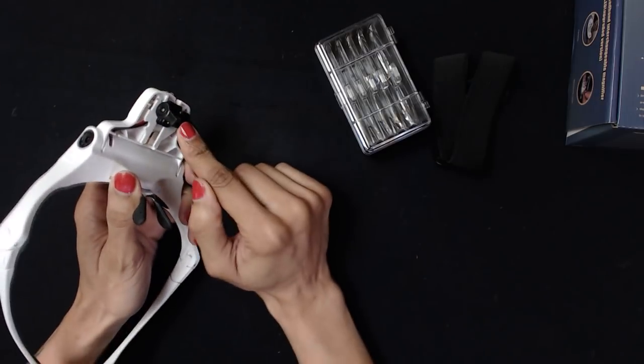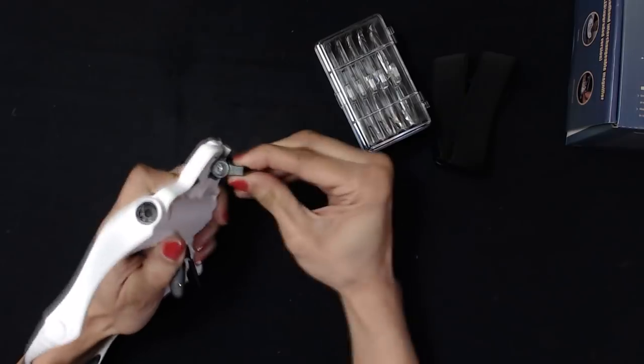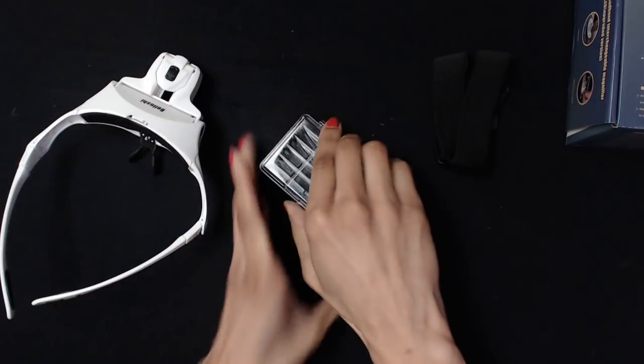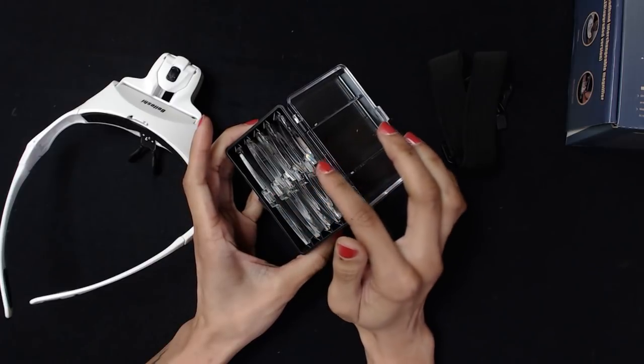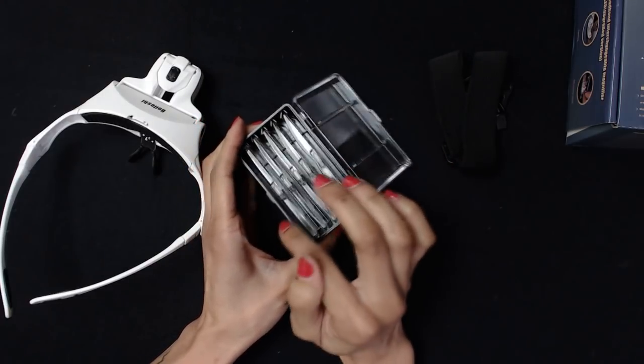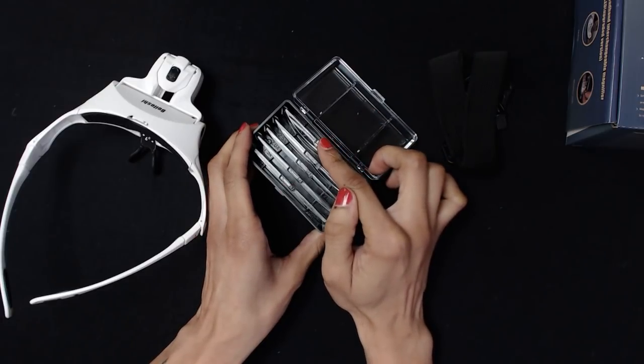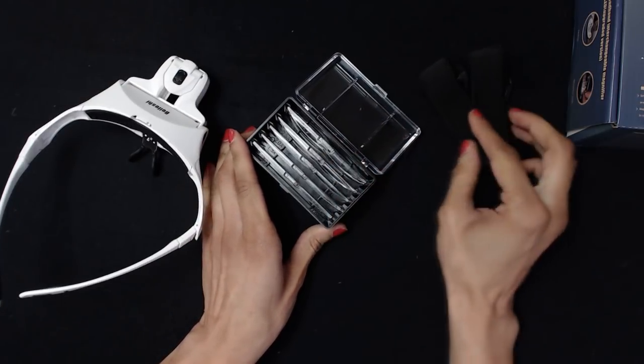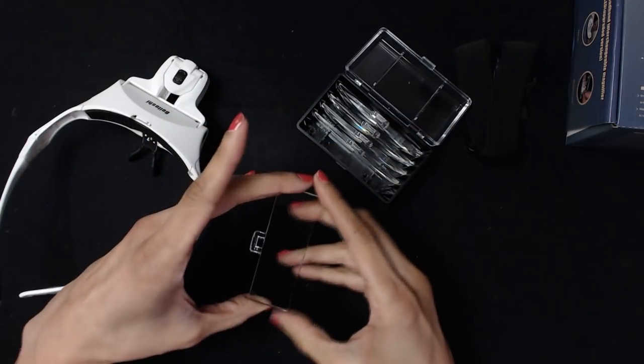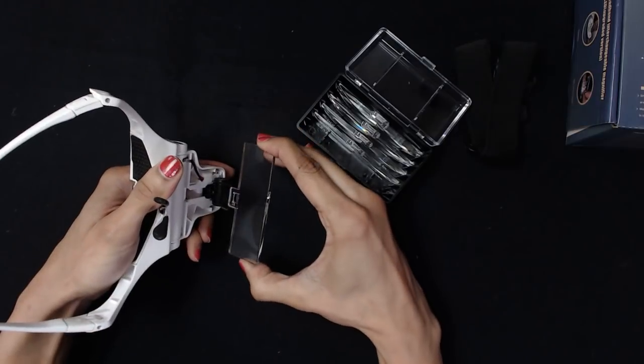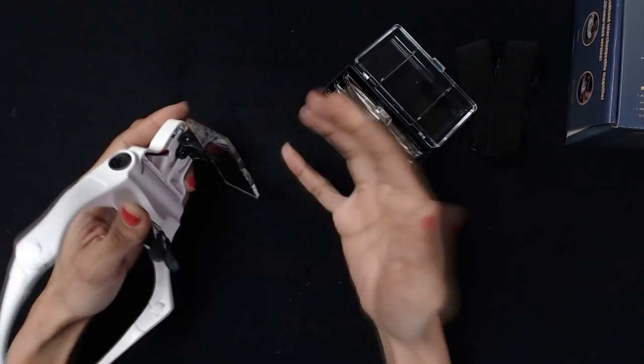The magnification lenses pop into here and twist and rotate. You get this whole set with about five different levels of magnification. This particular set ranges from 1.0 to 3.5 times magnification. You just take one of the lenses out, try not to touch the front, and pop it into this slot here. It locks into place, pretty sturdy, which is really cool.